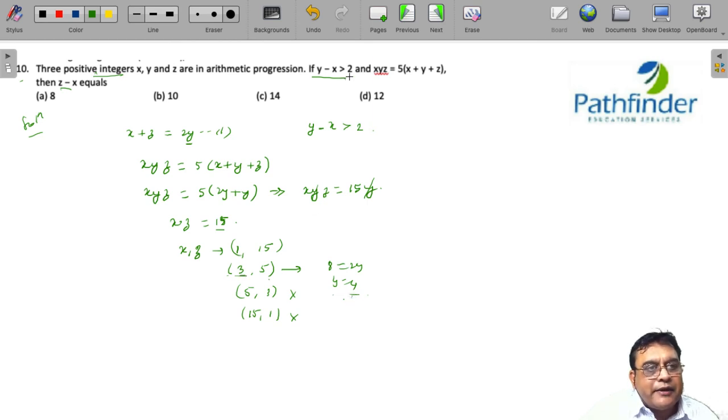This means the values of x and z are 1 and 15 respectively. x plus z equals 16, which equals 2y, so y equals 8. We are asked for z minus x. z minus x equals 14, which is option C.